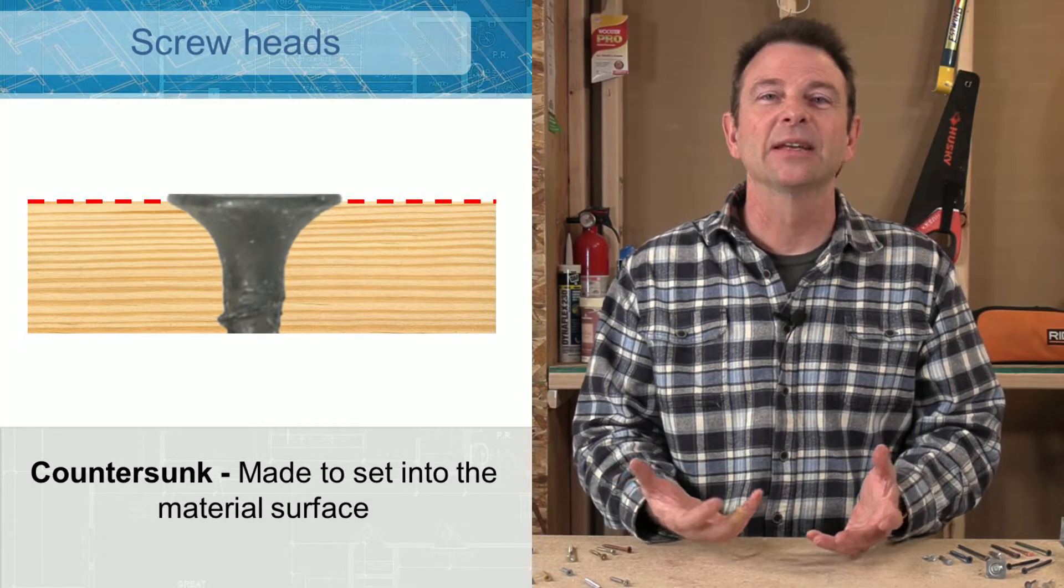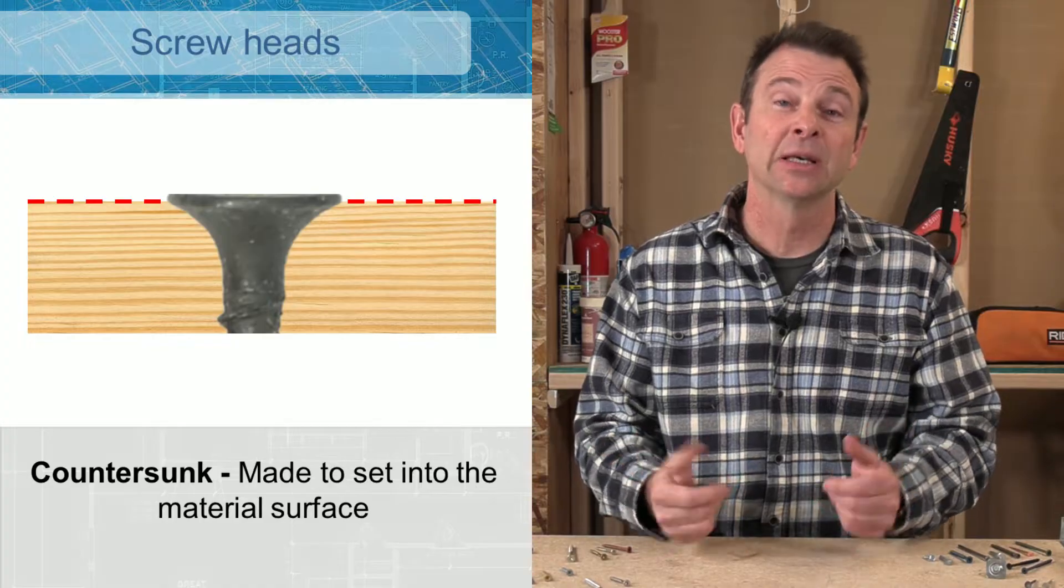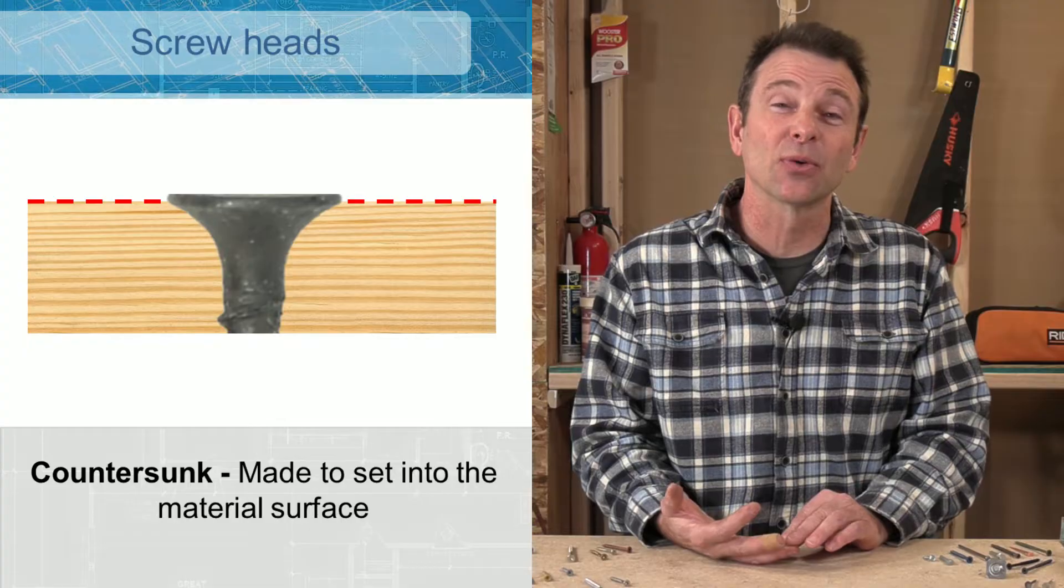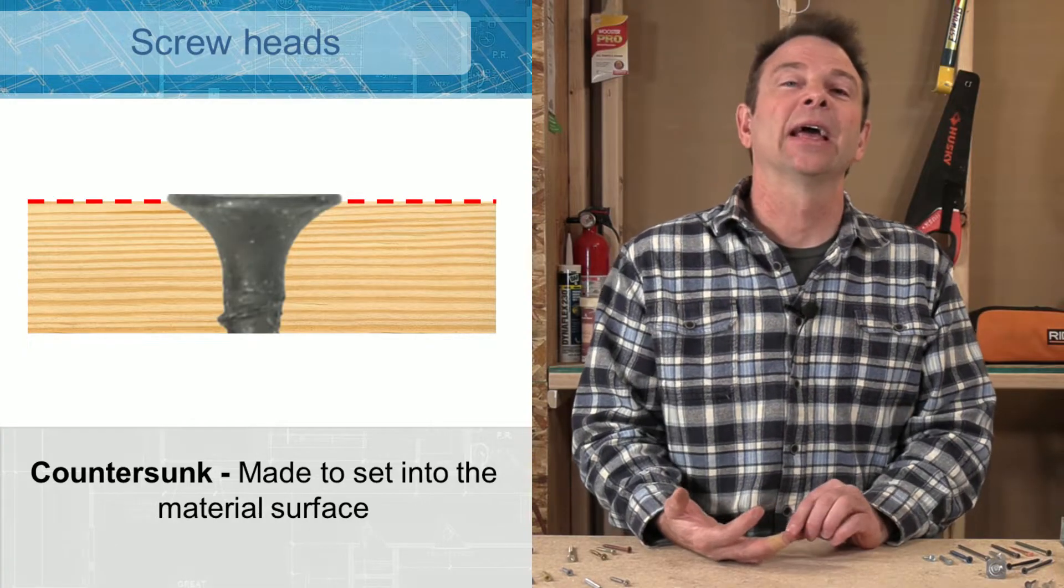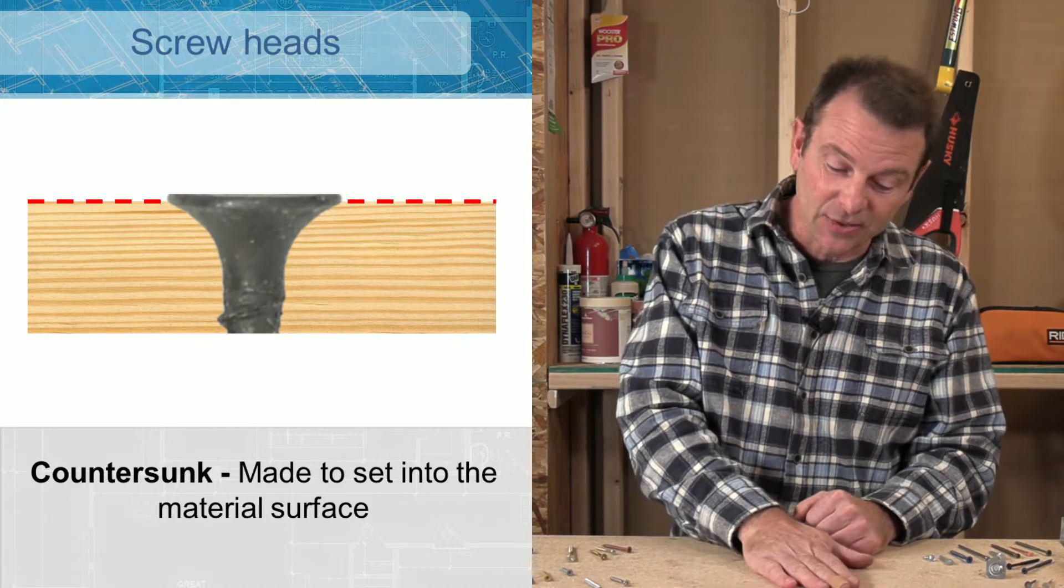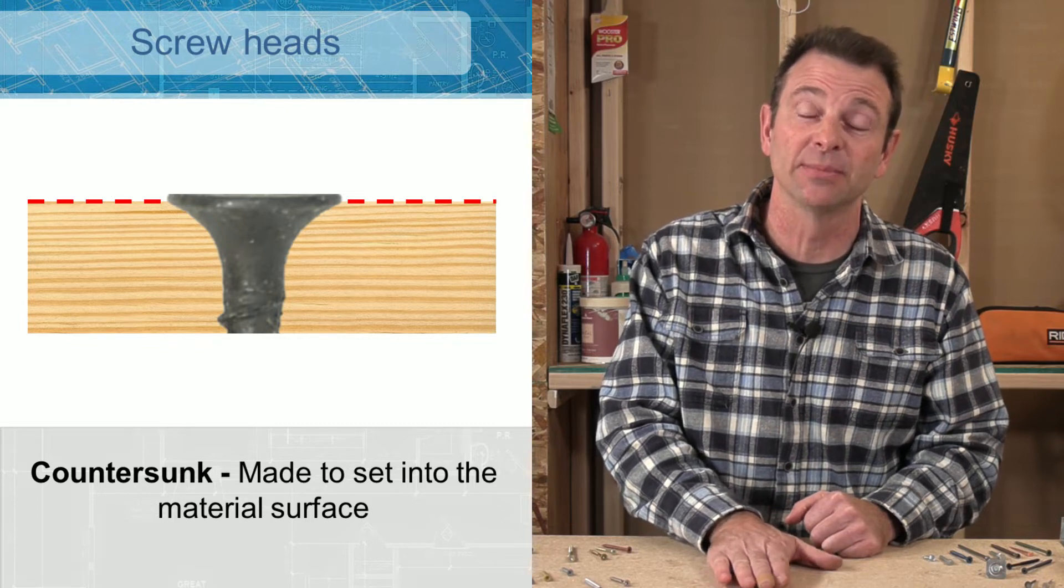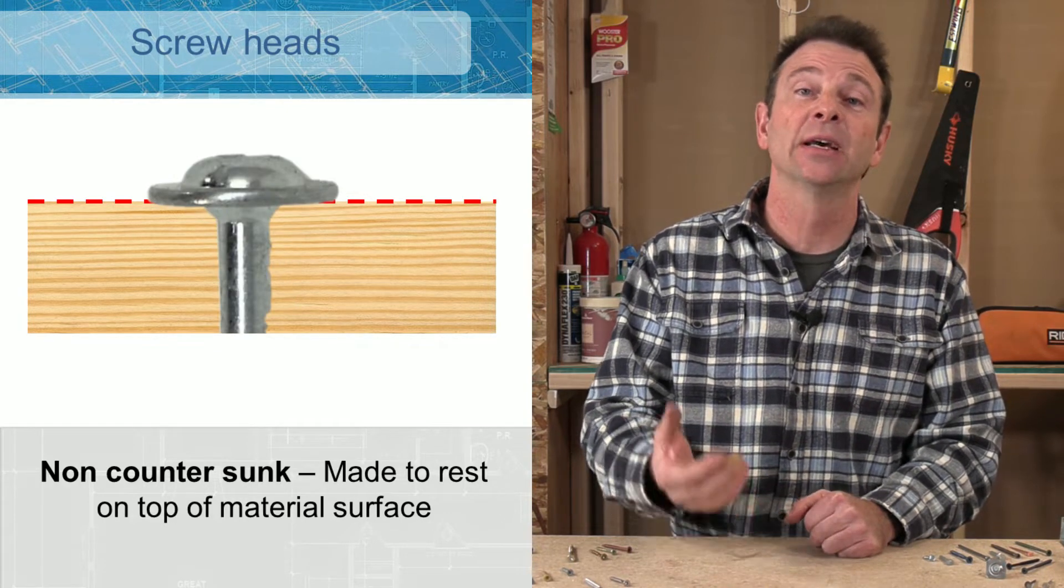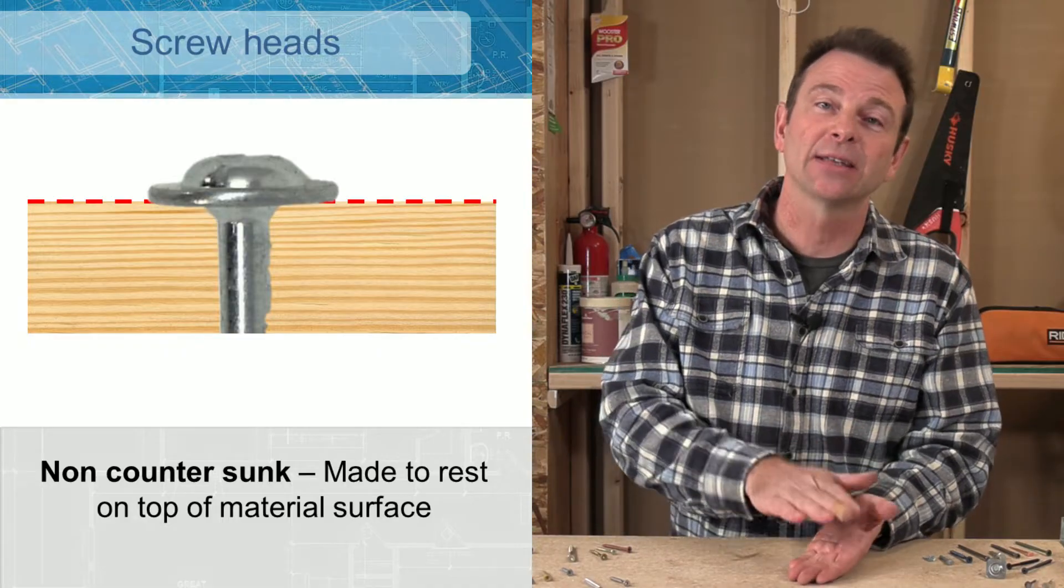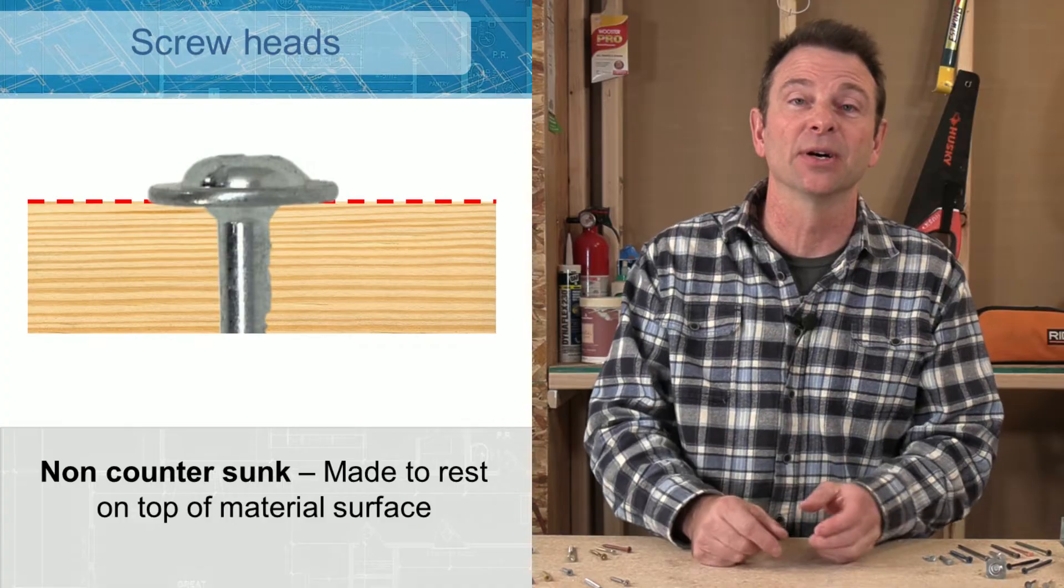So a deeper dive into the head of a screw brings us to a couple of different types. So that will be one that's countersunk. That means the screw will end up ultimately flush with the surface of the material it's being driven into. And then you'll have non-countersunk. This screw is designed to sit on top of the material, tight to that surface, but still exposed.